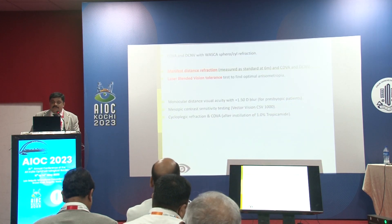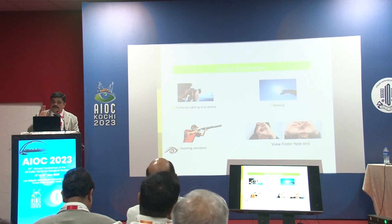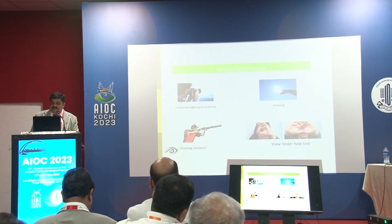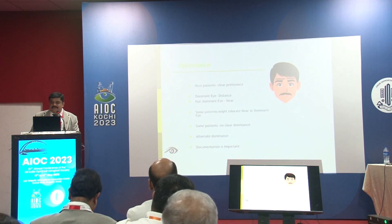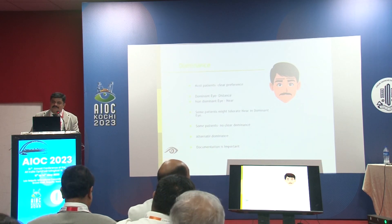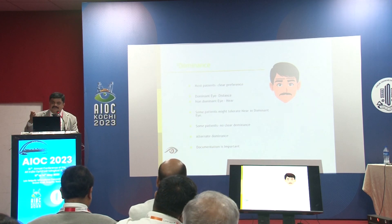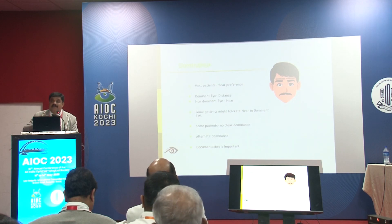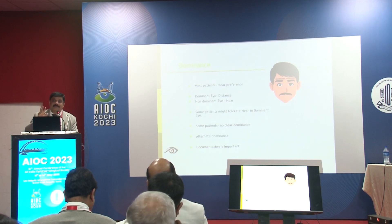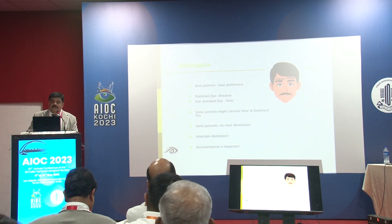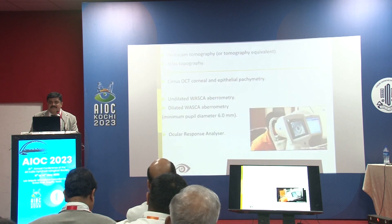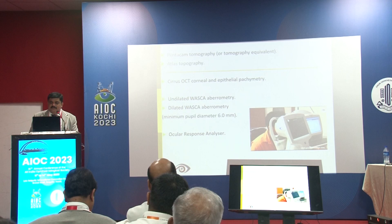Other tests to identify the dominant eye include the pointing test, shooting simulation, and the pinhole test — all give similar results. Most patients have a dominant eye corrected for distance and a non-dominant eye for near vision. However, some patients have no clear dominant eye — alternate dominance — and these patients are very tricky to post for PRESBYOND. You must repeat the test and documentation is very important. Once done, Pentacam topography is essential.